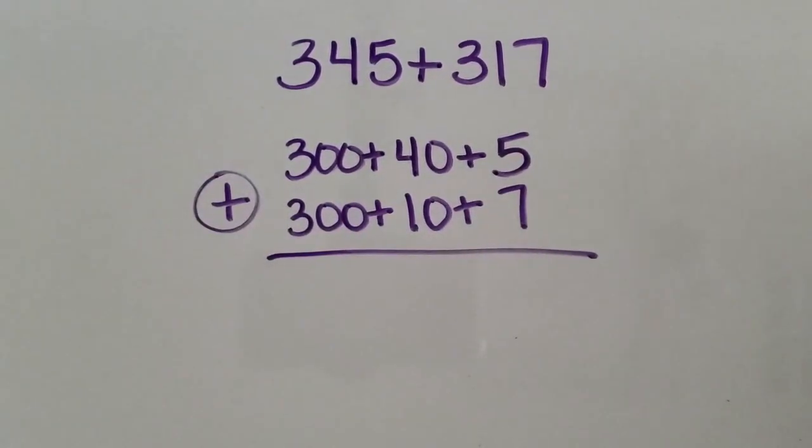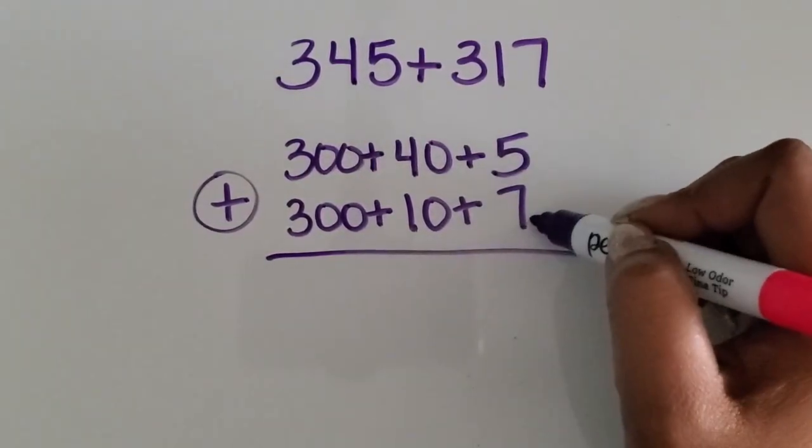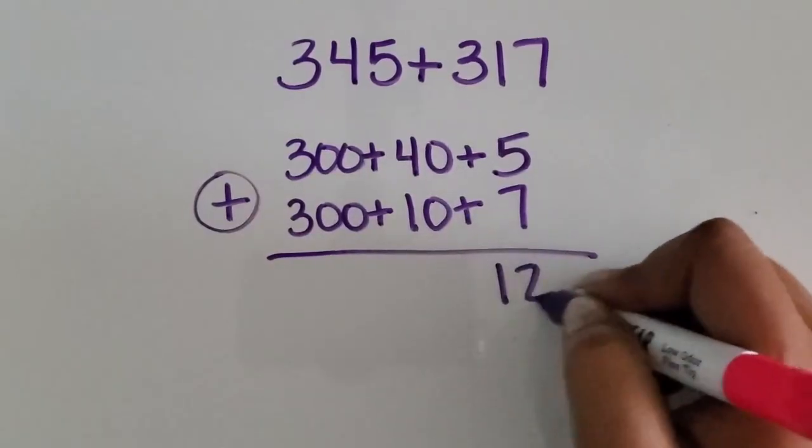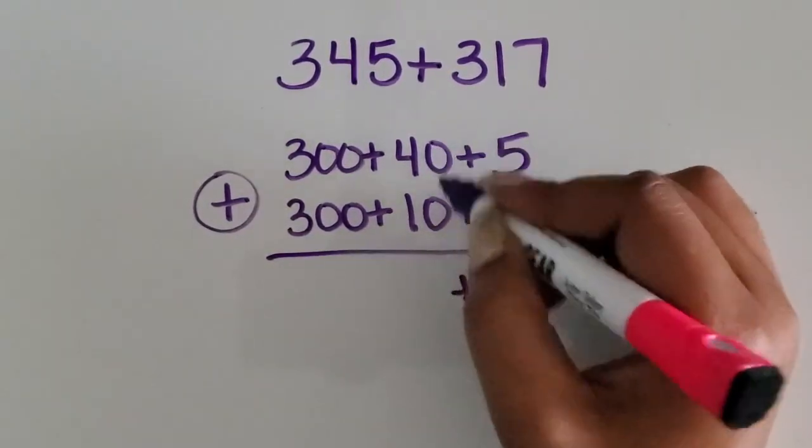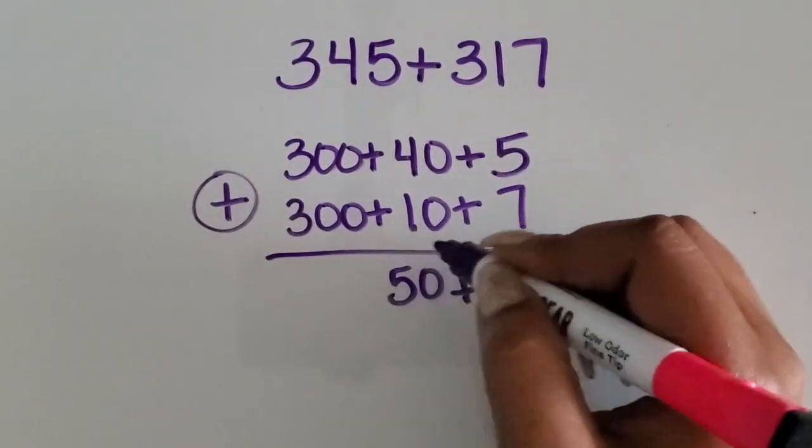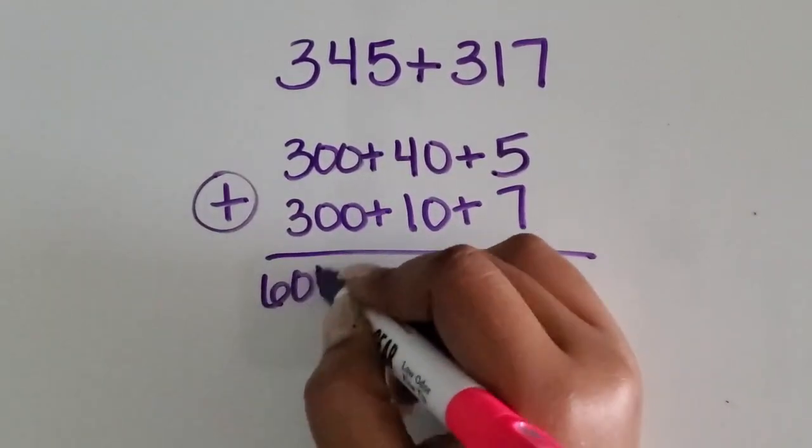Here's my operation. So I'm adding the two numbers together. Five ones plus seven ones is twelve ones. Forty plus ten is fifty. Three hundred plus three hundred is six hundred.